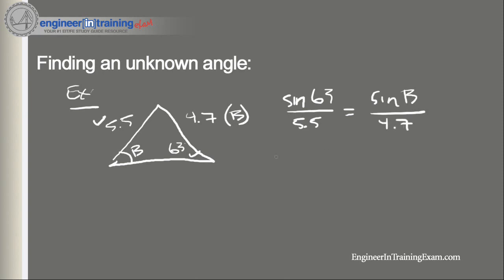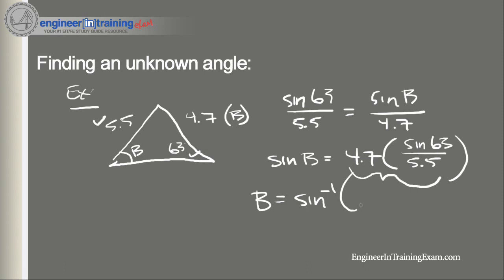So again, all we need to do is rearrange: sine of B is equal to 4.7 sine of 63 divided by 5.5. And we can take the inverse sine of this all. And let's calculate this out. This is all getting equal to 0.761.